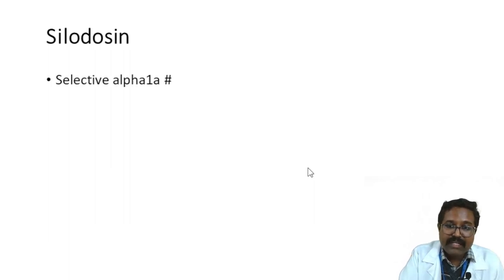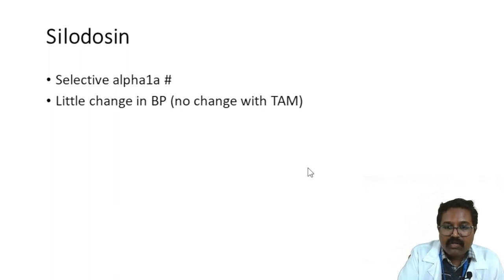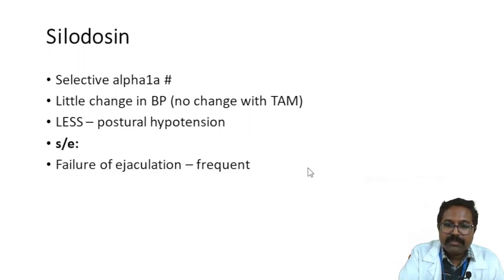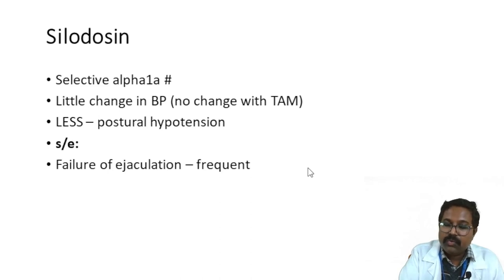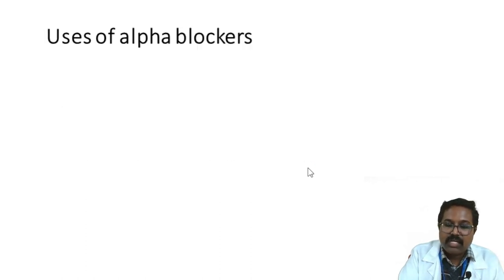Silodosin is a selective alpha-1a blocker that produces little change in blood pressure and less postural hypotension. However, failure of ejaculation is very frequent compared to tamsulosin, which can lead to sexual distress.